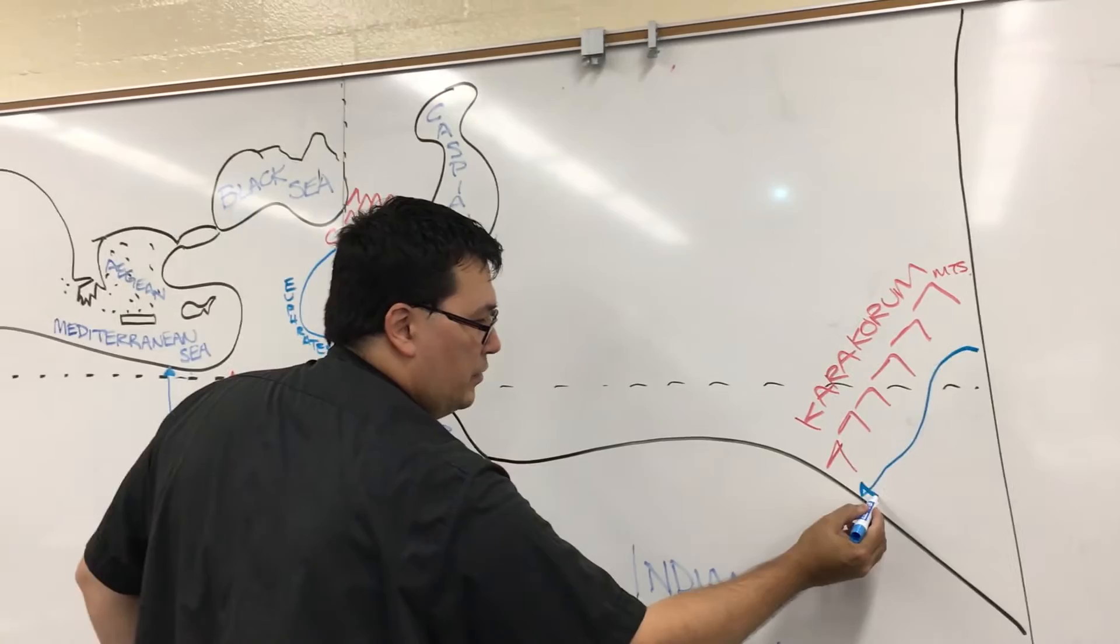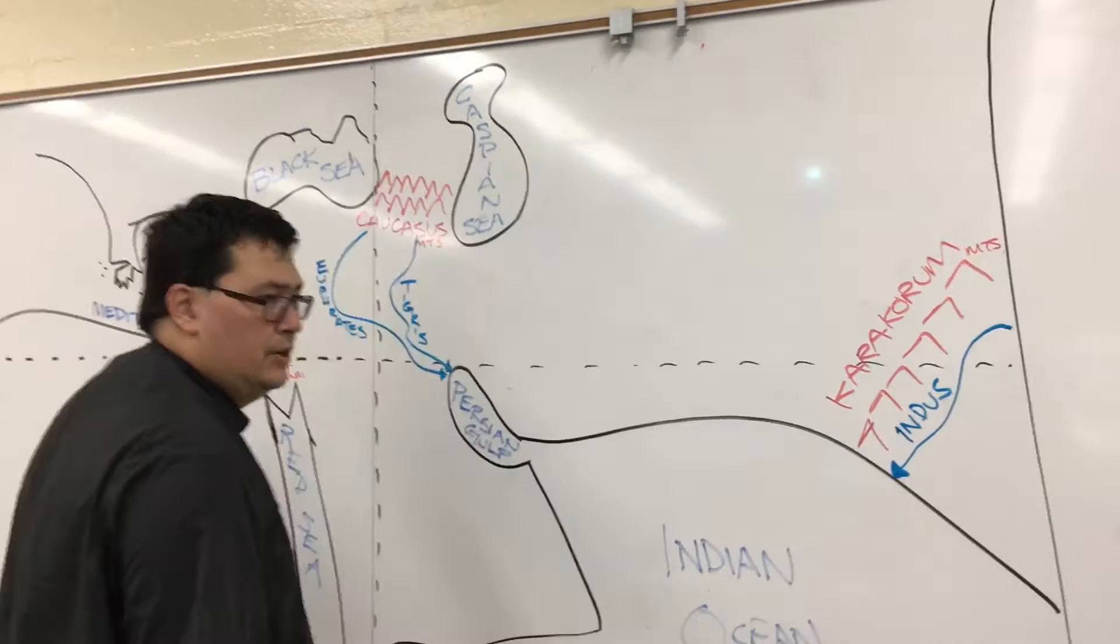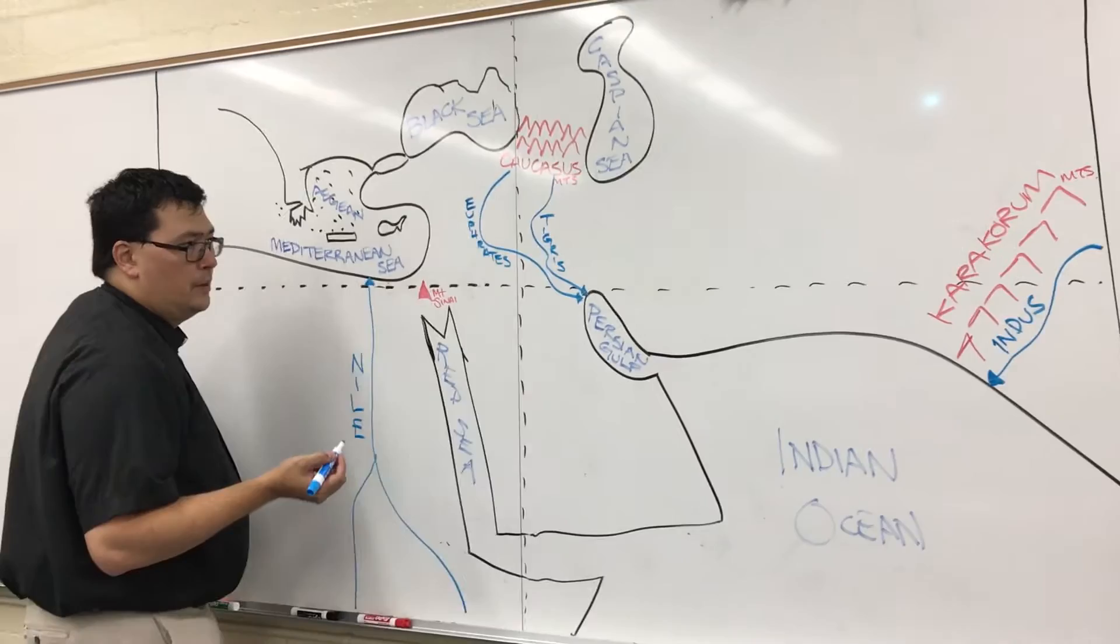Another river comes out of the Karakoram Mountains, flows down. And in this place, we have the Indus River. And of course, the country of India, as well as the Indian Ocean, is named for the Indus River.